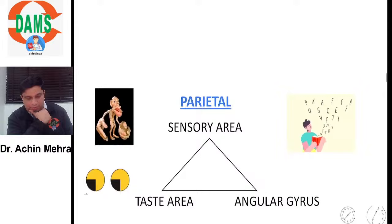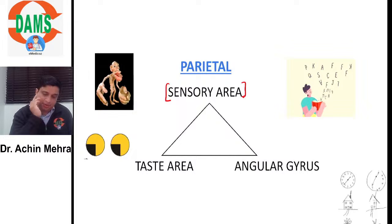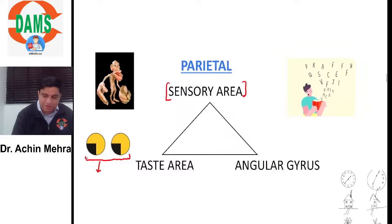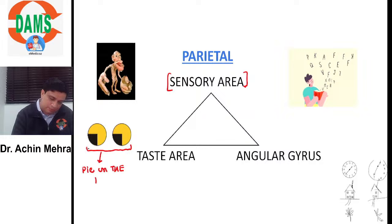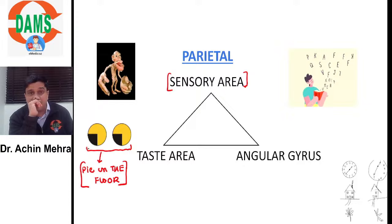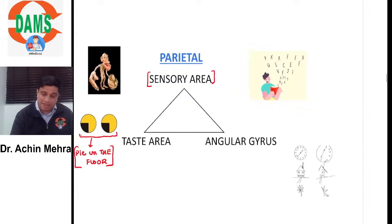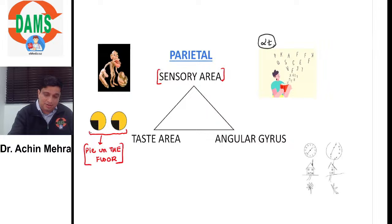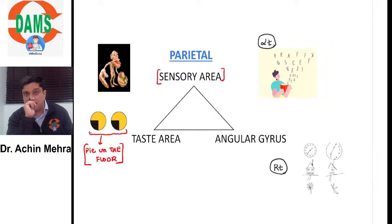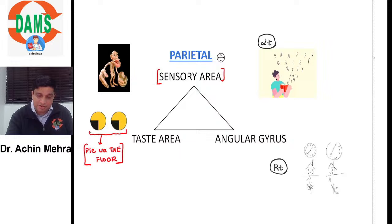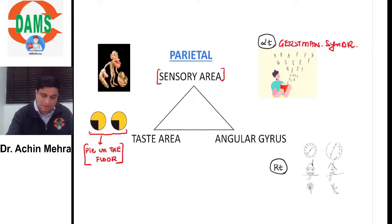Quick recap on parietal lobe: it contains the sensory area with representation similar to the motor homunculus. Parietal lesions cause optic radiation deficits — pie on the floor field defect. Taste area is also there. The left angular gyrus is important for learning; damage causes Gerstmann syndrome where the patient reads and writes words incorrectly. The right angular gyrus is for visuospatial orientation; damage causes hemispatial neglect.